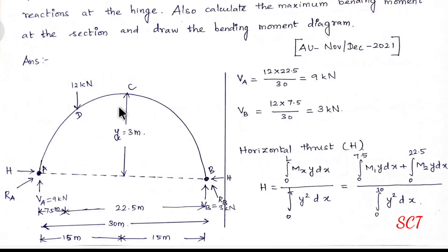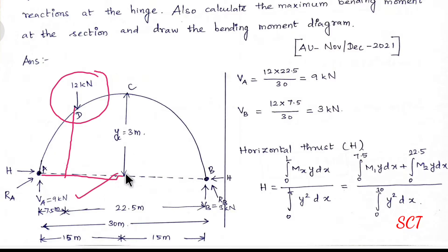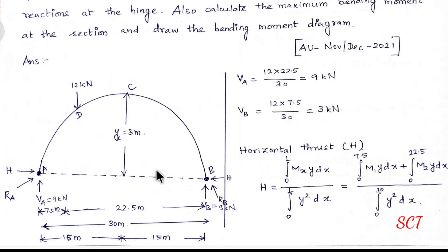Mostly, maximum bending moment is positive, so we will take the maximum bending moment. But we also need to draw the bending moment diagram, so we will also take the maximum negative bending moment. The maximum bending moment is under the load. So when it comes to half the length, this is span BC.